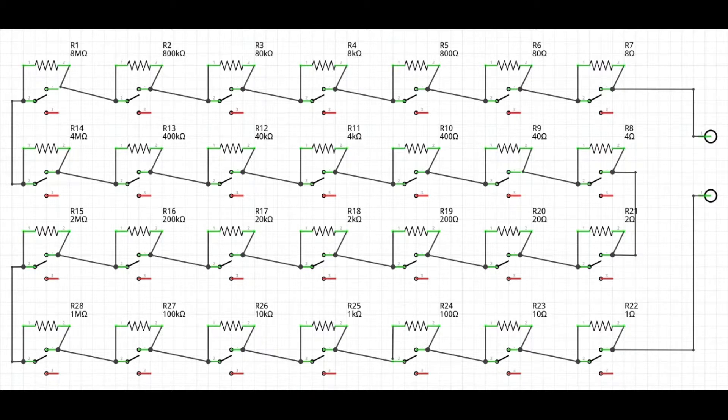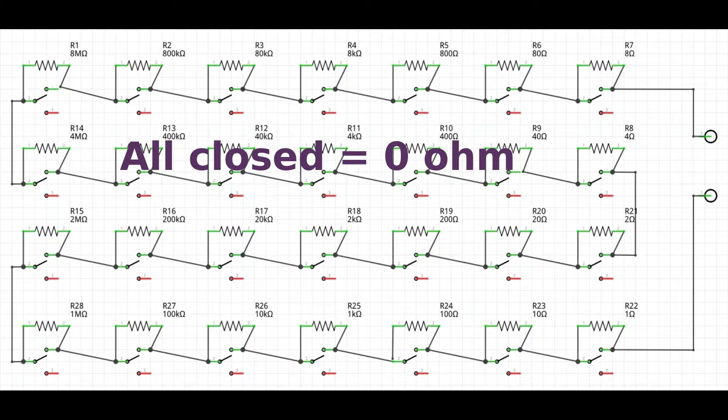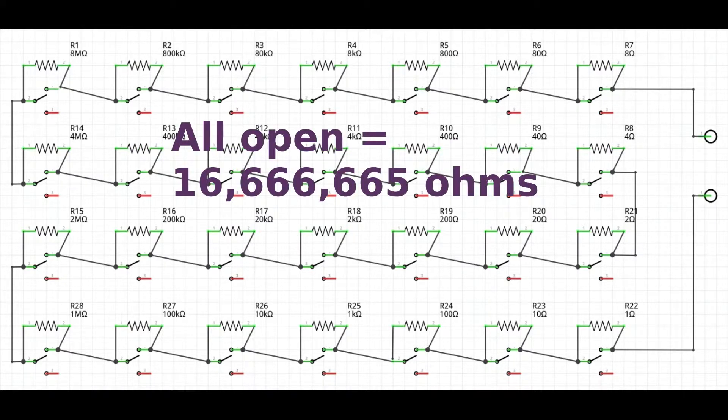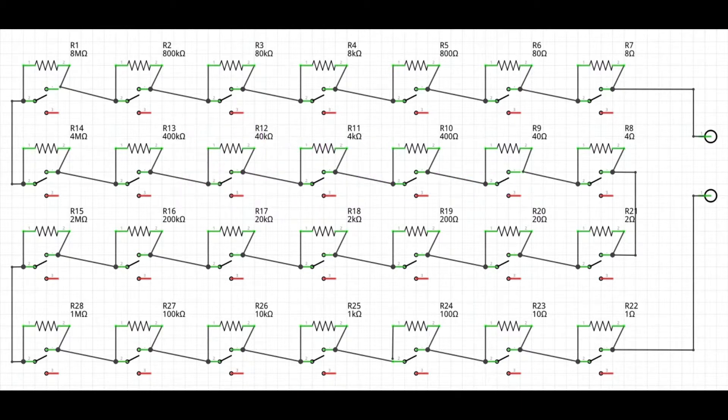If all the switches are closed, the box presents a resistance of 0 ohms. If all the switches are open, all the resistors are added up and present a total resistance of 16,666,665 ohms. This way you can set up the box to have any resistance value in between those, with a resolution of one single ohm. Isn't that cool?